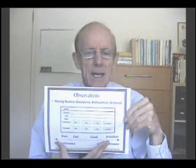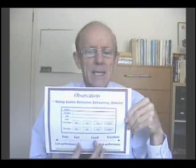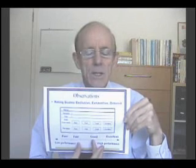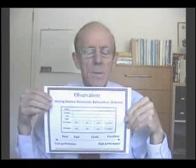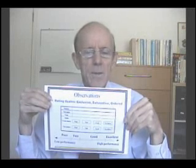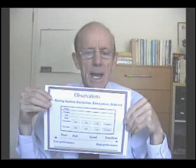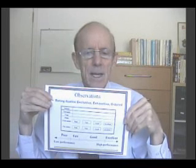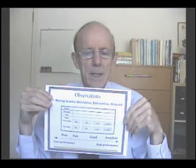The end categories are infinitely wide because there is always a better performance than one we have ever seen and always a worse performance. The central categories have no reason to be the same width. So this is the latent variable with its categorization. From this ordinal data, we have to construct measures on a latent variable in which the abilities of the candidates are adjusted for the severities of the raters who happen to rate them, and also the difficulties of the tasks, since different examinees may be doing tasks of different difficulties.